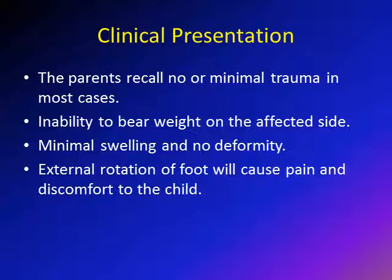The clinical presentation for a child with a toddler fracture will be different from most other fractures. This is a spiral fracture that usually happens due to a torsion injury — not a major trauma. In most cases, the child will be playing with siblings or friends, and there is no obvious history of trauma. It's not that he fell from a height or was hit by a car. It's usually minimal trauma — he twisted his ankle and fell down, or a friend fell on him.